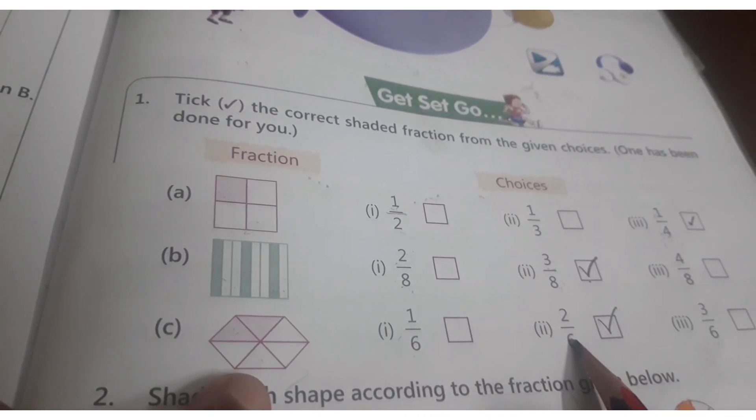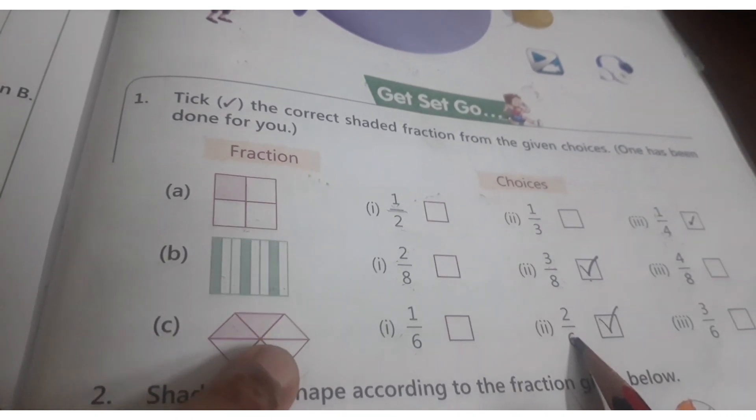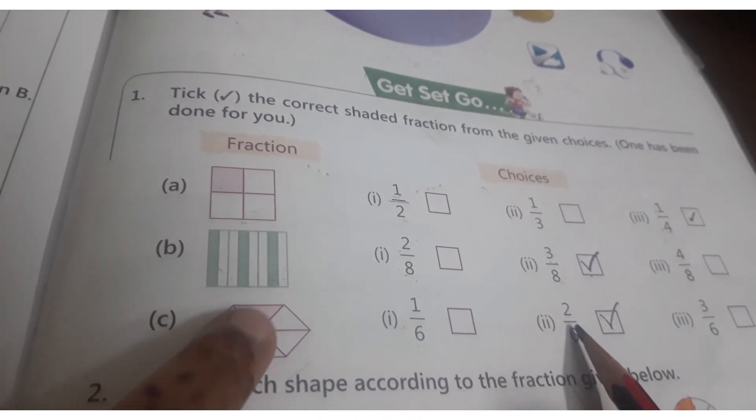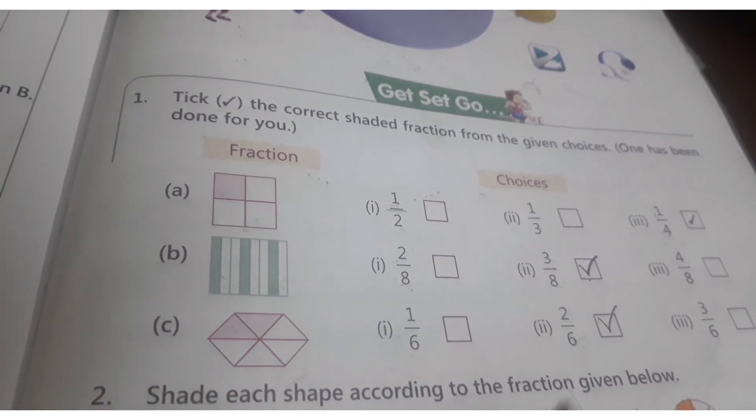So 2 by 6. Denominator we have to write first. Total 6 division. 6 parts se divide kiya hai. Parts me 1 to 2 box ku color kiya hai. So 2 by 6.